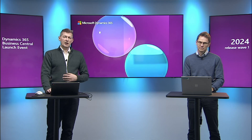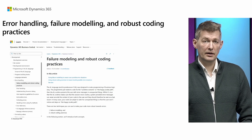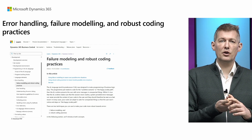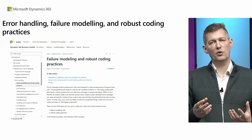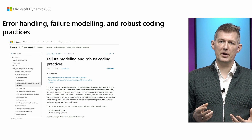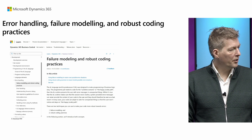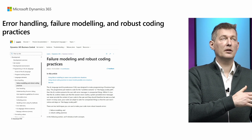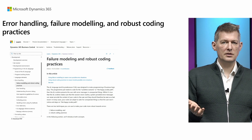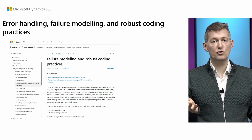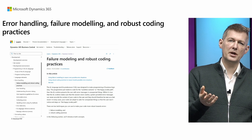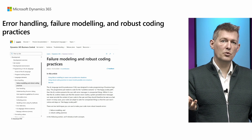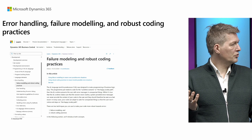We also added, in case you need to handle errors, a lot of new content to our documentation for developers on error handling, including failure modeling and a way to reason over errors called robust coding practices. Go check that out if you work in AL so that you can create error messages that degrade gracefully, so users don't get error messages — and if they do, there's guidance on how to express errors in language that users understand, and of course use the new actionable error framework introduced last year.